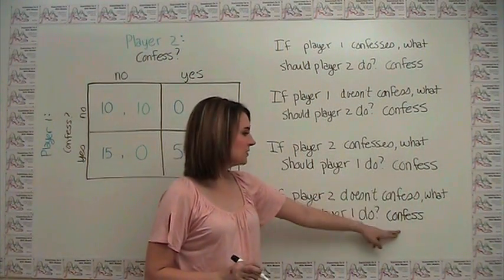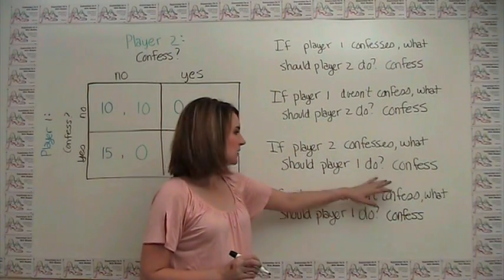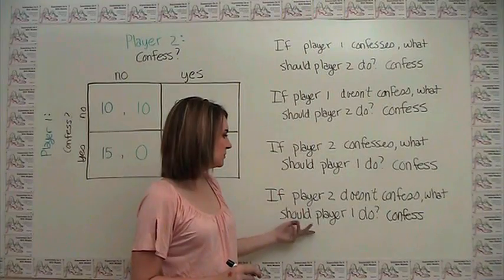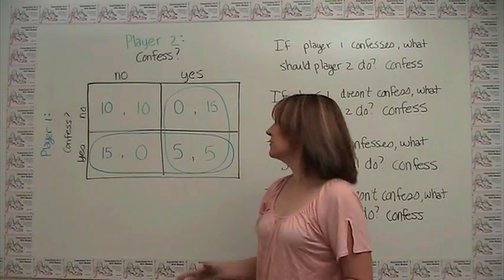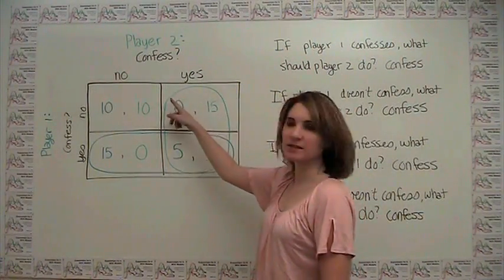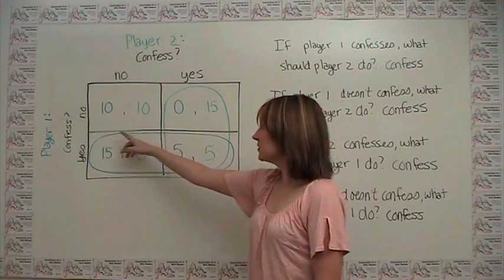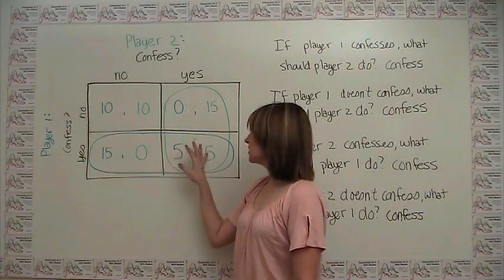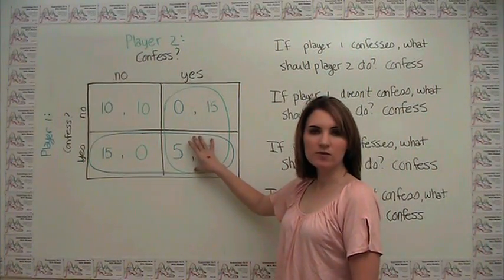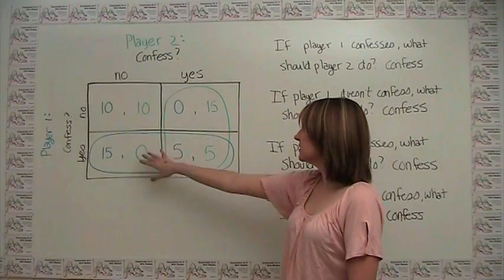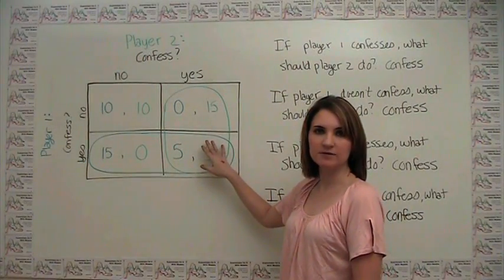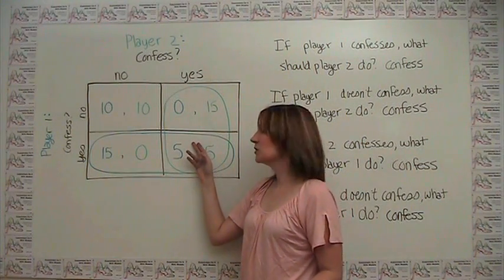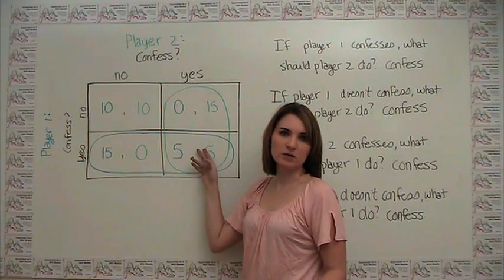Notice here that because we got confess in both cases, confessing is also a dominant strategy for player 1. So here I've circled player 2's best responses in green, and I've circled player 1's best responses in blue. And you'll notice that there's one place here where they overlap to say that in the situation where both parties confess, both of them are responding as best they can to what they think the other person is going to be doing.